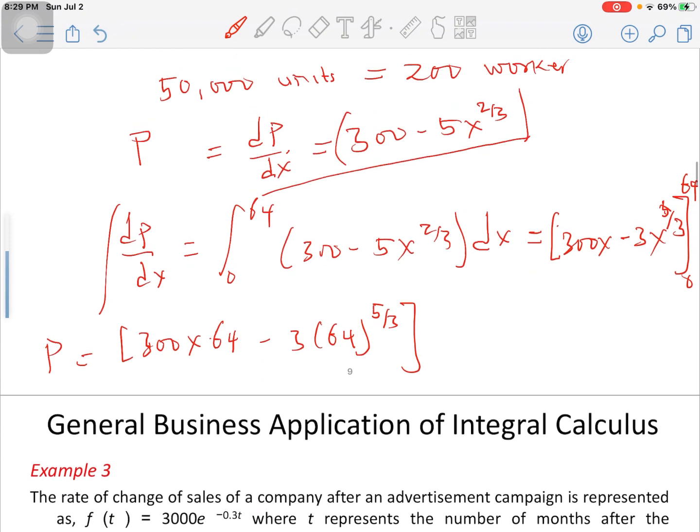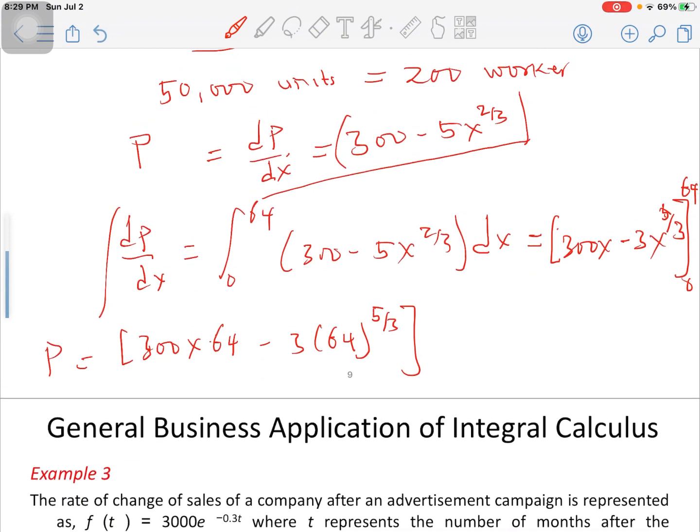Based on that, since all these ones contain x in it, it is going to be 0. This is the upper limit minus the lower limit, and the lower limit is 0. Therefore, at the end of the day, our production from 0 to 64 is going to give us 16,128 units.